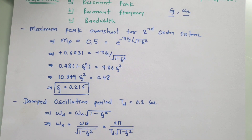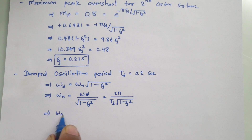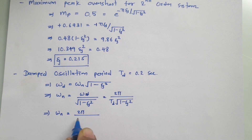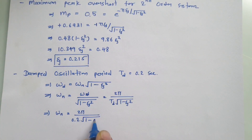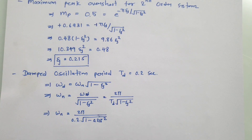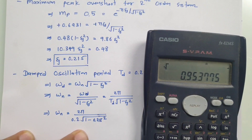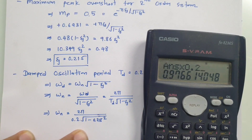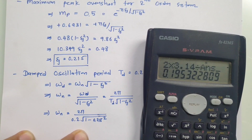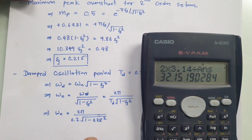Placing the values into the formula: ωn = (2π / td) / √(1 − ζ²) = (2π / 0.2) / √(1 − 0.215²). Solving this in the calculator gives ωn = 32.15 radians per second.